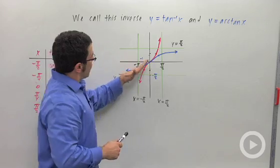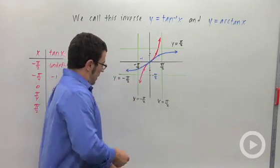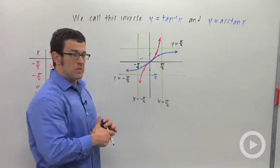So this is the graph of y equals inverse tangent x or arctan x. And one more thing, the domain and range of this function.